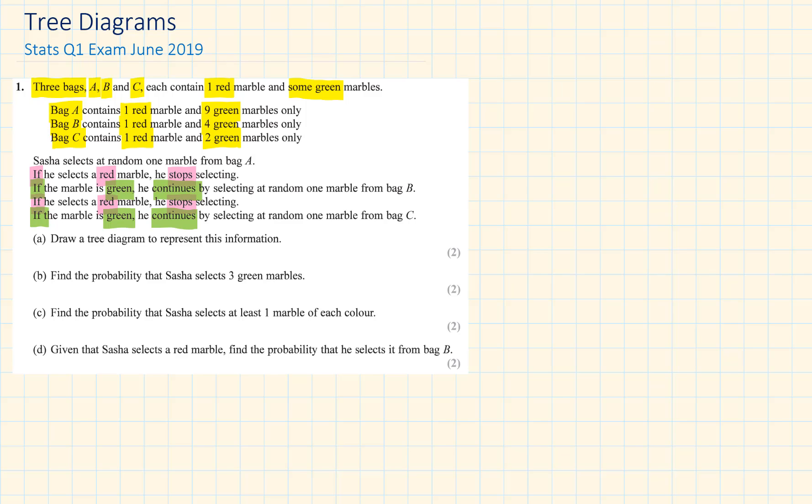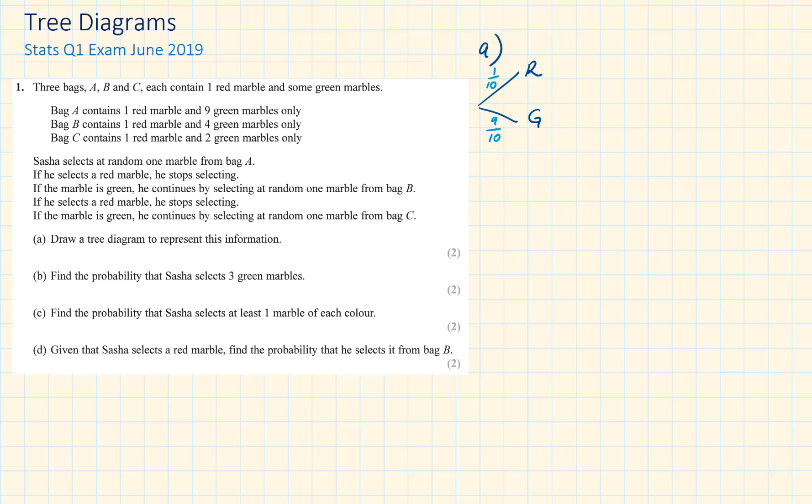For part A, draw a tree diagram to represent this information. The probability of red is 1 tenth, the probability of green is 9 tenths. Now we have an important detail here, if red he stops, so we are not supposed to continue the branches of red. If he selected green he continues, so we will continue the branches of green, but he's going to pick from bag B.